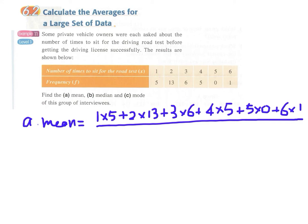We divide this by the sum of all the frequencies. We have 30 interviewees, so divide by 30 and get 2.5. Now for the median: